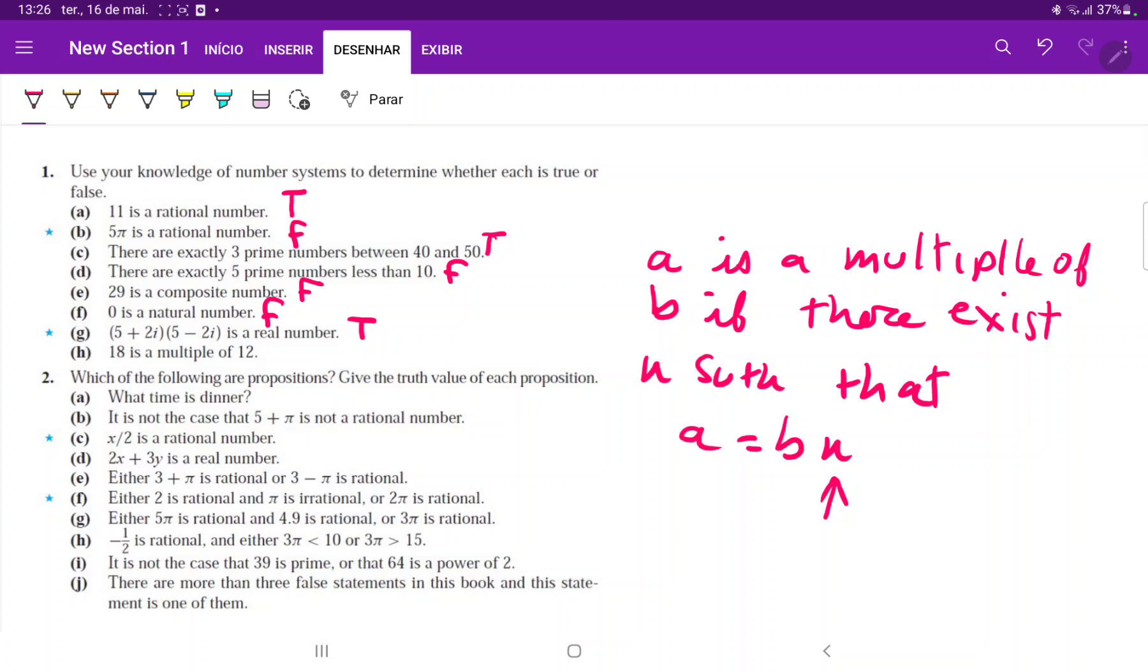So a is a multiple of b if there's a number such that b times n is equal to a. So a has to actually be an integer times b. There's no integer that you can multiply 12 to get 18, so this is false.